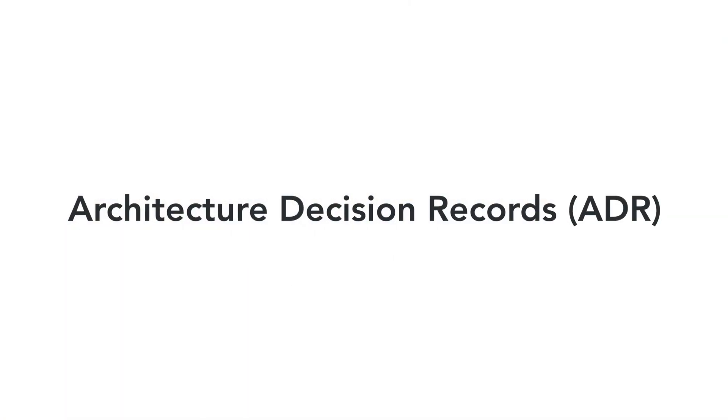We'll talk about two techniques: first, architecture decision records, and second, request for comments. An architecture decision record is a document that a team creates when they want to introduce a significant change to the architecture or to the system.